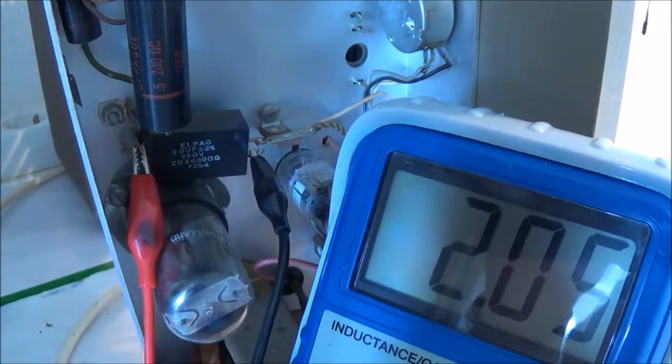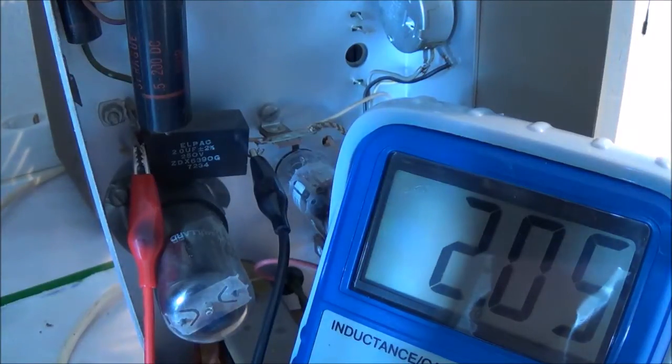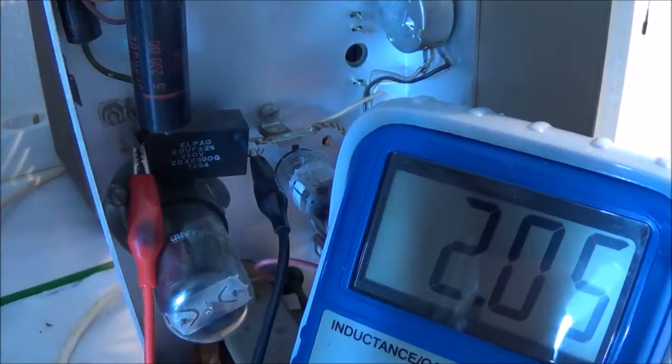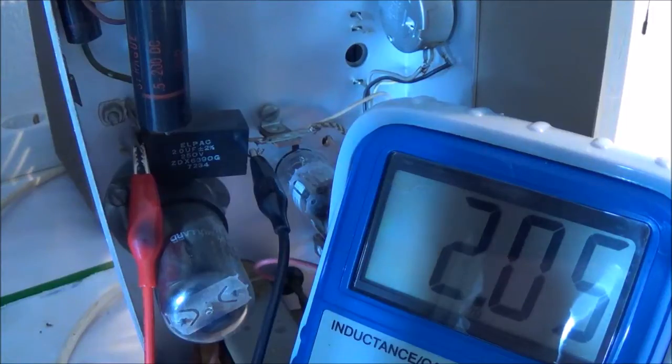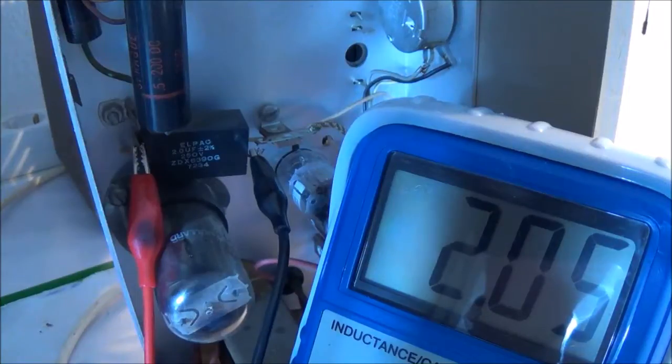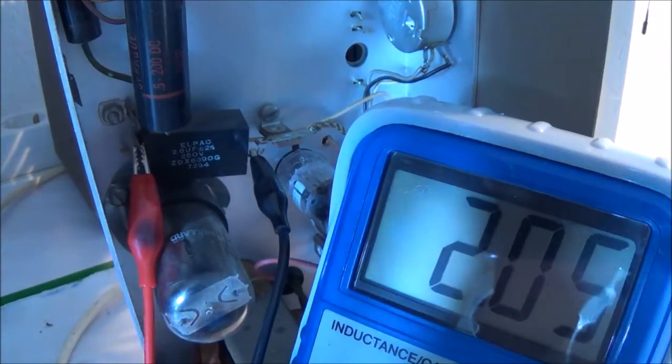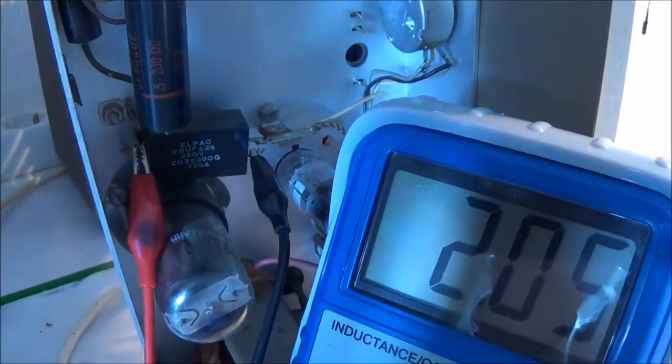I'm checking this 2 microfarad 2% precision capacitor. I looked online and looks like I might have a problem getting this thing. I'm not sure whether I'm going to replace it anyways. I hooked up my capacitor checker here which is rated at I think 2.5%, and it shows me that the actual capacitance of this capacitor is 2.05 microfarads. So I think I'm just gonna go ahead and leave it in there.